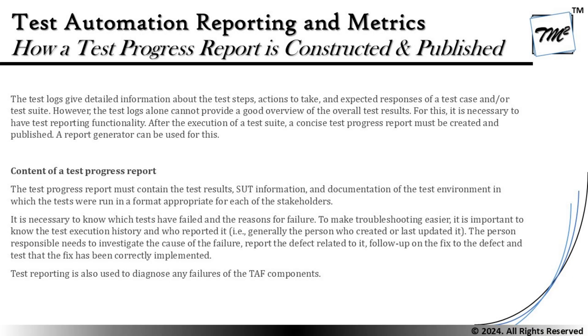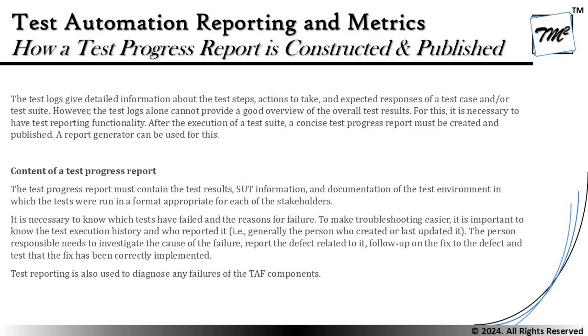The first thing to address is: what are the contents of the test progress report? We can relate this to our foundation level, where we have already covered the information to be included. When it comes to TAS, it includes those details plus SUT-related information. The test progress report must contain the test results, SUT information, and documentation of the test environment in a format appropriate for each stakeholder. Remember, the format of the report is completely determined by the audience — you need to understand your stakeholders and their needs, because the report may vary depending on the type of audience.